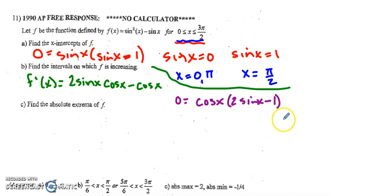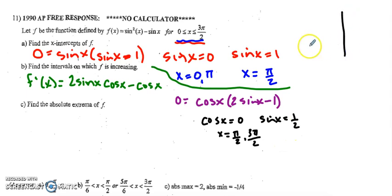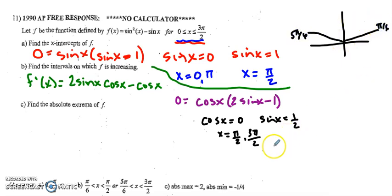The zeros of the derivative occur where cosine equals zero and where sine equals one-half. Cosine equals zero at pi over two and at three pi over two on this interval. Sine x equals one-half in the pi over six family — at pi over six and five pi over six on the unit circle. So x equals pi over six and five pi over six.